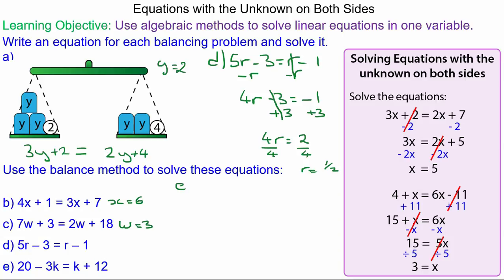And for the last question, question E: 20 minus 3k equals k plus 12. Now we want a positive coefficient of k, so we're going to add 3k to both sides this time. So 20 and negative 3k plus 3k is 0, so 20 equals 4k plus 12. And we can take the plus 12 to the other side by taking away 12. 12 take away 12 is 0, so 8 will equal 4k. Divide both by 4, so k will equal 2.